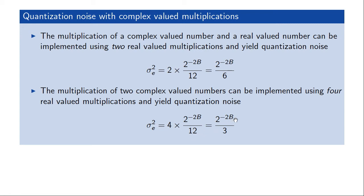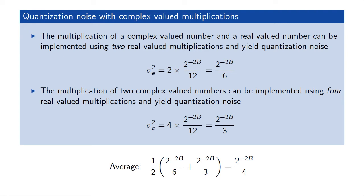So a complex-times-real multiplication yields a noise variance of two to the minus two B over six, while a complex-times-complex multiplication yields two to the minus two B over three — twice as much. For this particular FFT algorithm, each layer has exactly the same number of each type of multiplication, so we can use their average, two to the minus two B over four, as the noise power per source throughout the algorithm.